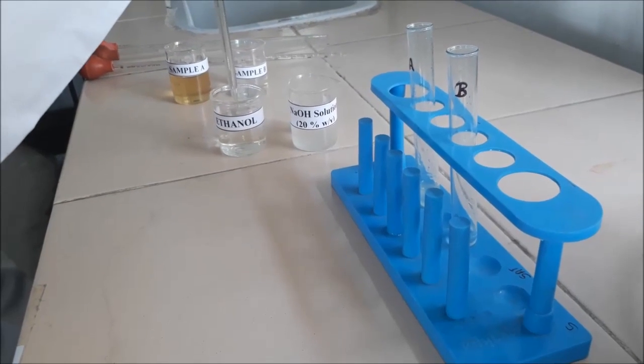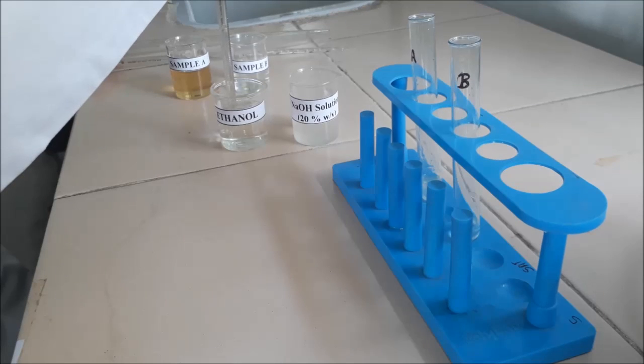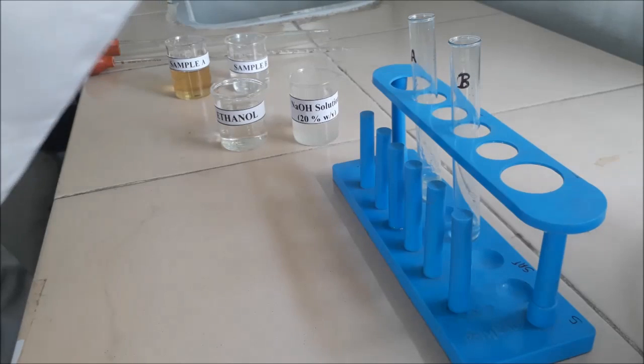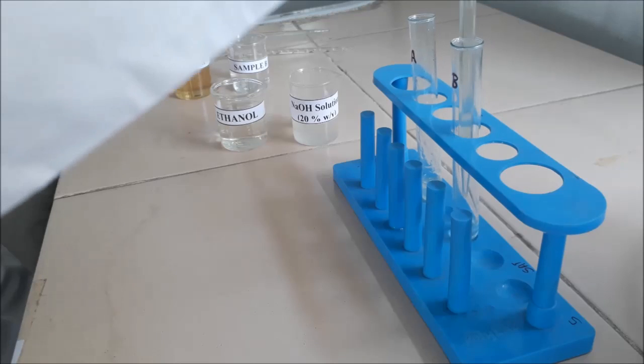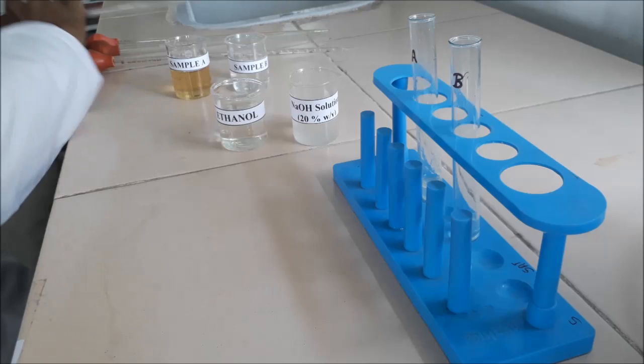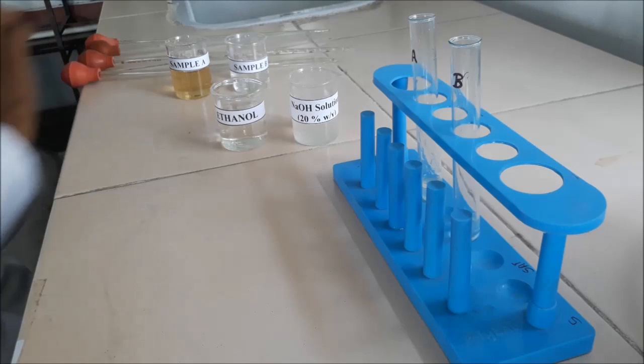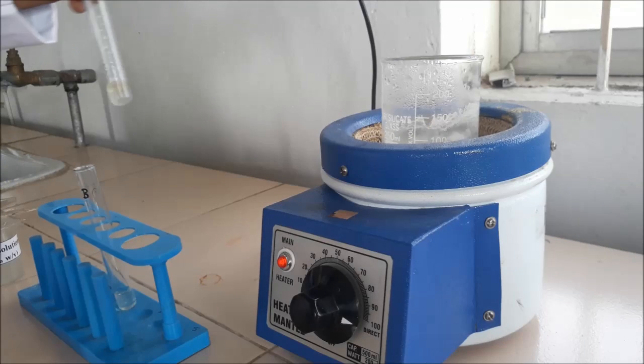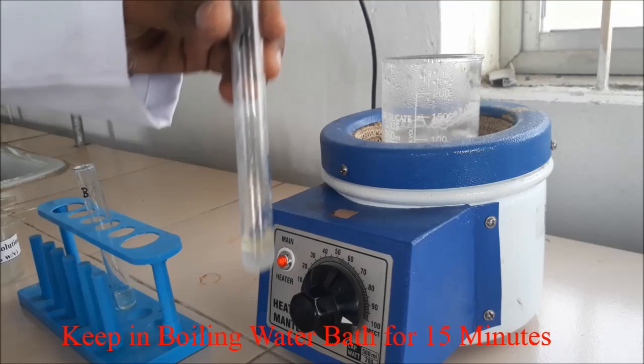Again measure 0.5 ml with the same pipette and transfer it into test tube B. Now mix the content of both the test tubes and then keep the test tubes in the boiling water bath.